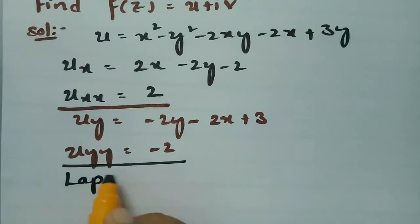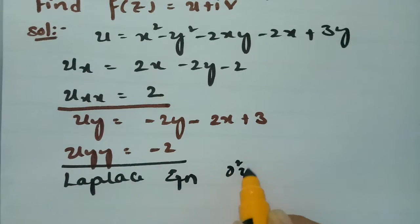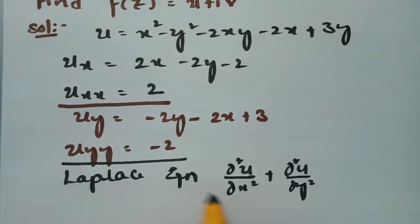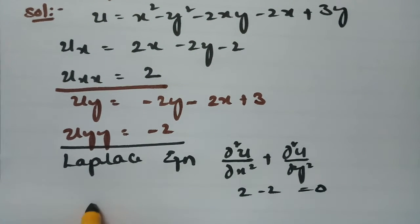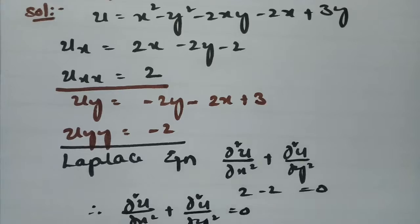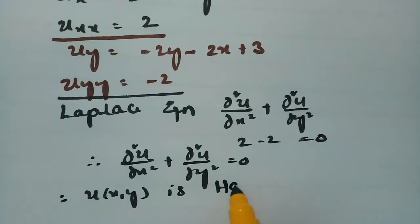Now we verify the Laplace equation: ∂²u/∂x² + ∂²u/∂y² = 2 + (-2) = 0. Therefore ∂²u/∂x² + ∂²u/∂y² = 0 is satisfied, and u(x, y) is a harmonic function.